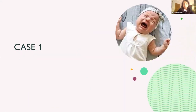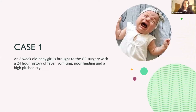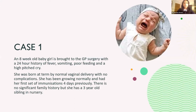Our first case is an eight-week-old baby girl brought to the GP surgery with a 24-hour history of fever, vomiting, poor feeding, and a high-pitched cry. She was born at term by normal vaginal delivery with no complications and has been growing normally. She had her first set of immunisations about four days ago and has a three-year-old sibling in nursery. What will you do next?